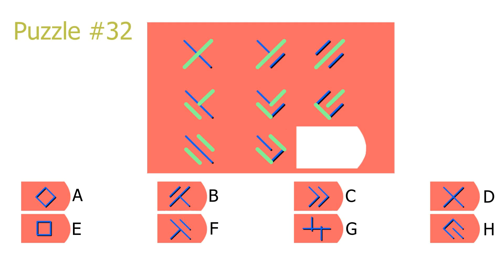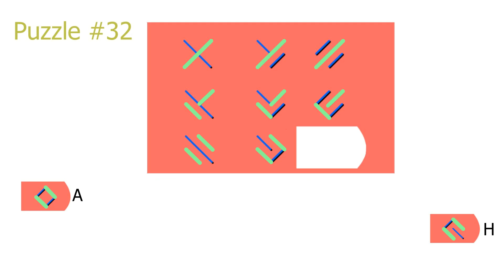If we look at the third row, we should have the same repetition in the answer as we have in the two first pictures. Out of the eight answers, only answer A and answer H features this repetition, so we can eliminate all the other answers.